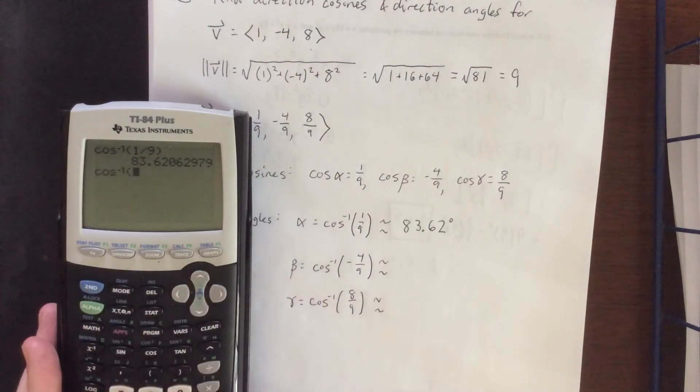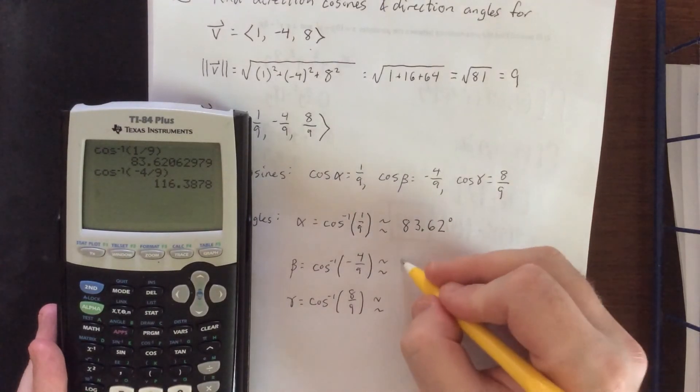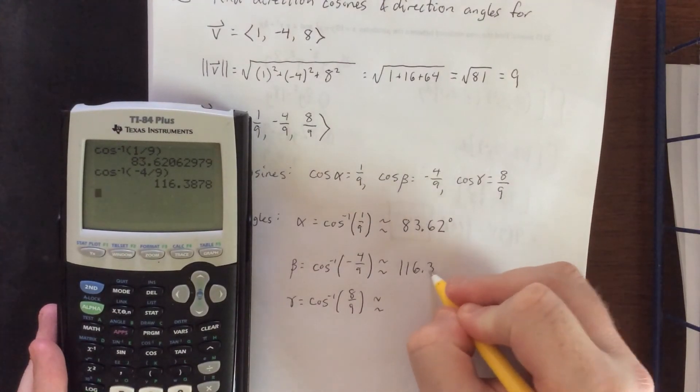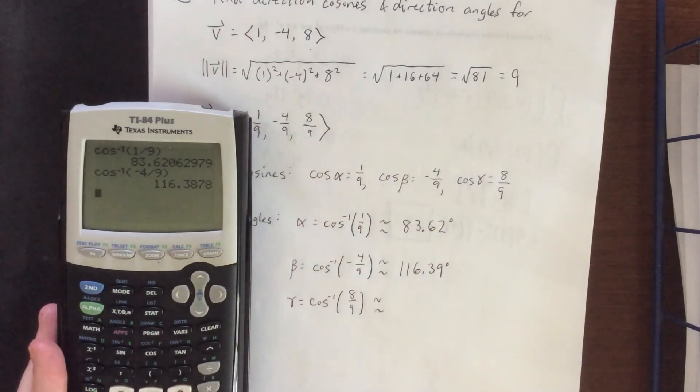For the next one, arc cosine of -4/9. I'm expecting about 120 degrees or so. 116.39 degrees, rounded at the second decimal place.